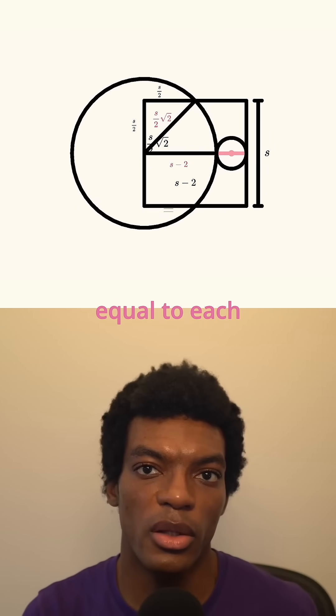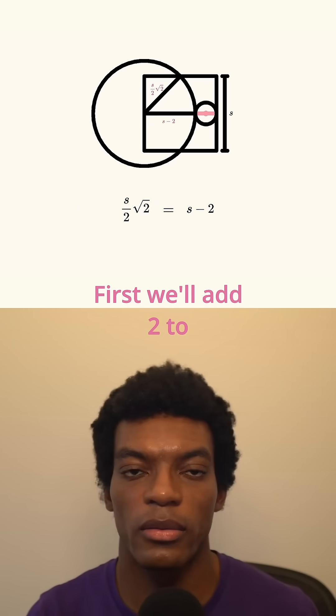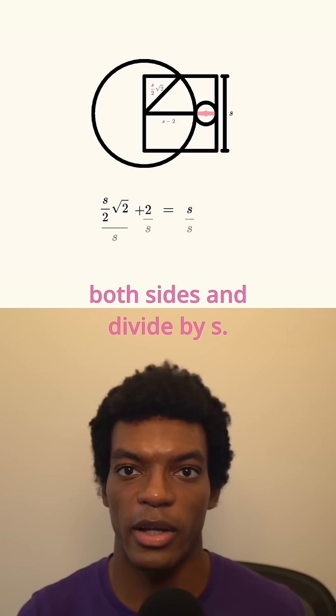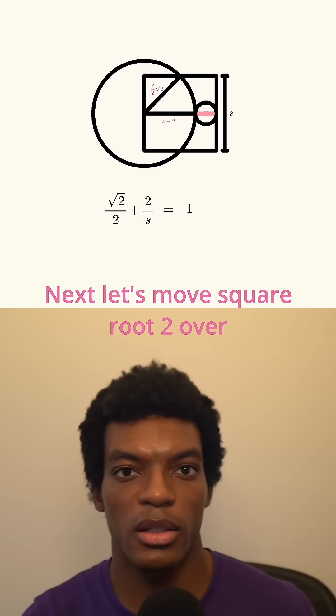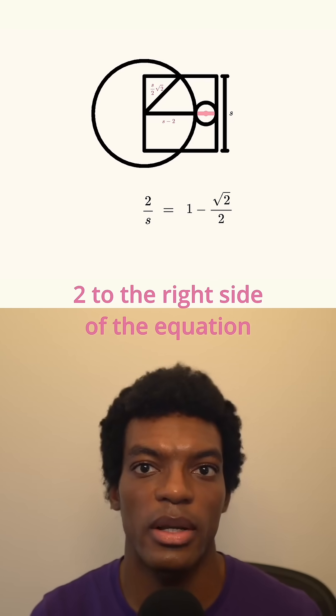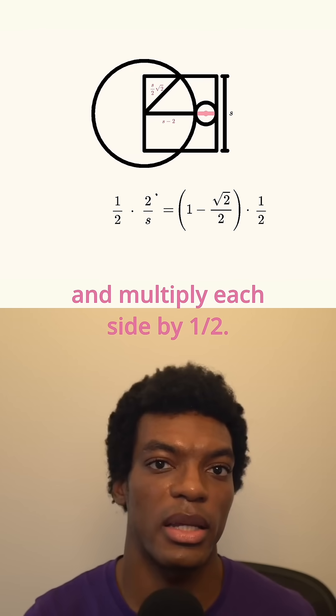Now we'll set those two expressions equal to each other and solve for S. First, we'll add 2 to both sides and divide by S. Next, let's move square root 2 over 2 to the right side of the equation and multiply each side by one half.